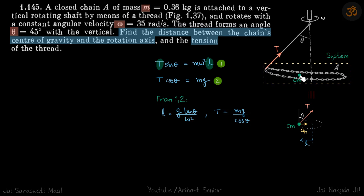The center of mass is here. The angular velocity is omega and angle theta is given. We need to find the distance of the chain's center of mass from the rotation axis and the tension in the thread.